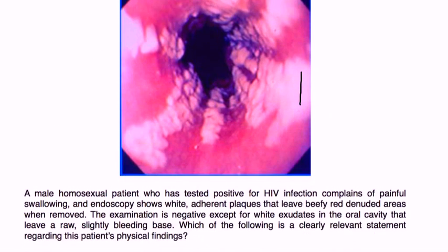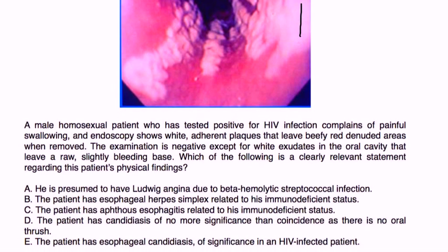Let's take a look at a couple of clinical vignettes. A male homosexual patient who has tested positive for HIV complains of painful swallowing, and endoscopy shows white plaques that leave beefy red denuded areas when removed. Examination is negative except for white exudates in the oral cavity that leave a raw, slightly bleeding base.